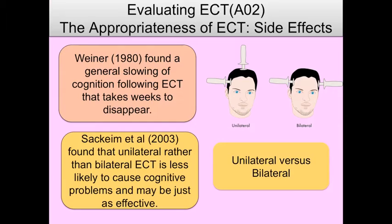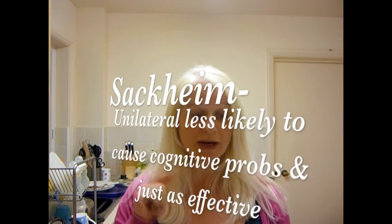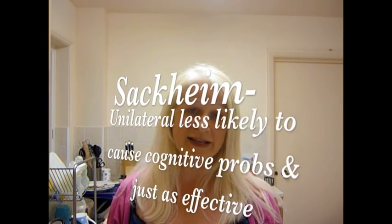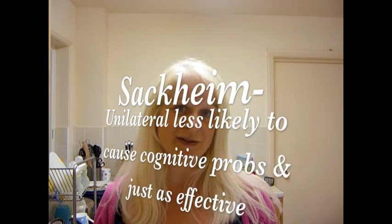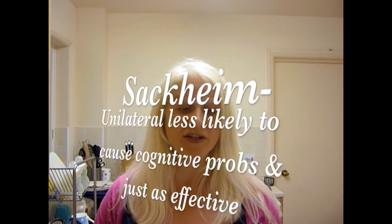Wiener found a general slowing of cognition following ECT that takes weeks to disappear — meaning patients can't think or process their thoughts as quickly. However, Sackheim et al. found that unilateral rather than bilateral ECT was less likely to cause these cognitive effects and might be just as effective.